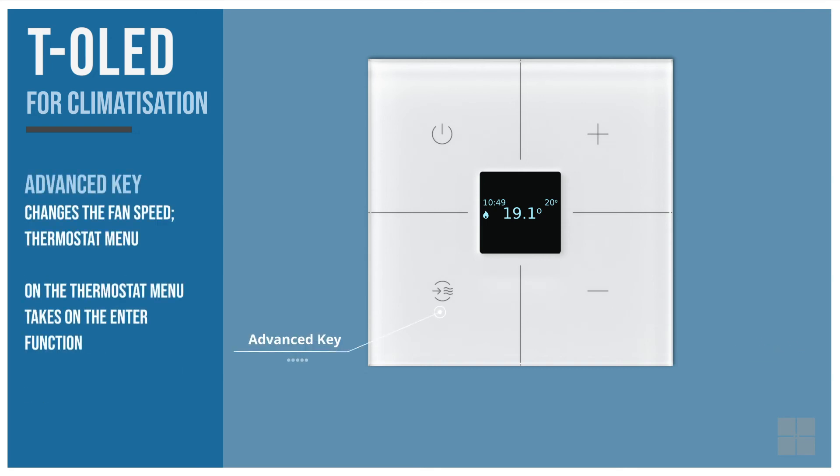The advanced key changes the fan speed if the thermostat is on and if it is controlling a device with this feature. When the thermostat is off, it is used to enter the thermostat menu by pressing for 5 seconds. On the thermostat menu, it takes on the enter function — use this key to select the menu option.